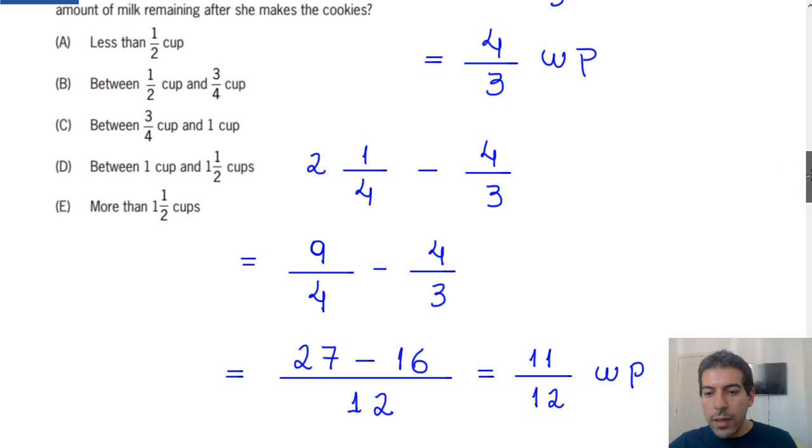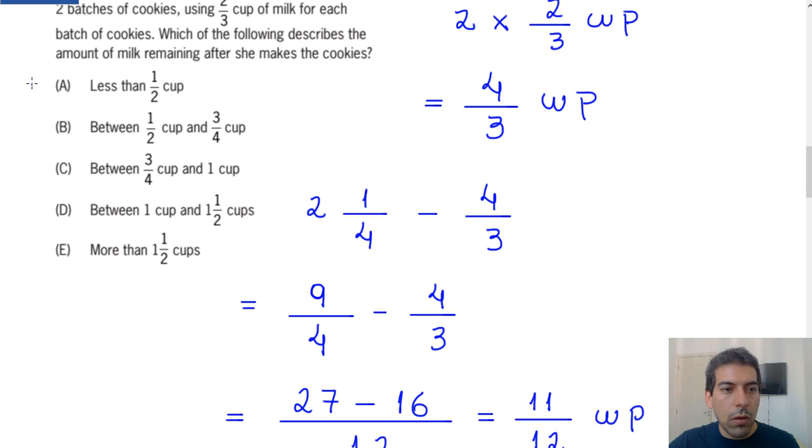We have to find the correct answer, and I tell you that the correct answer is letter C. Why is that? Note that this value, 11/12 cups, is in fact between 3/4 cups and 1 cup.